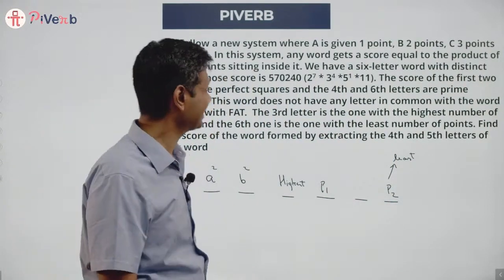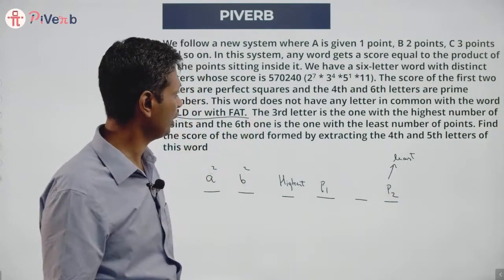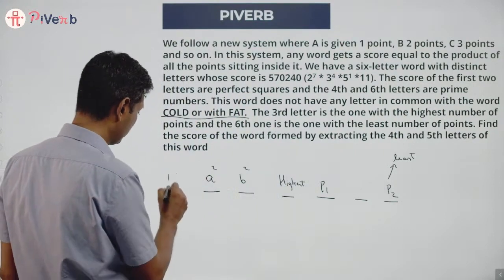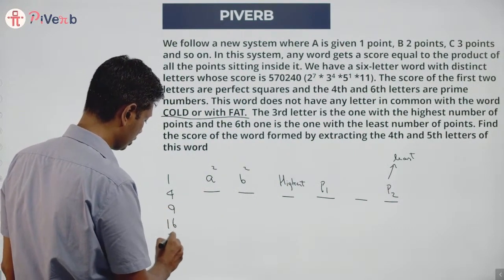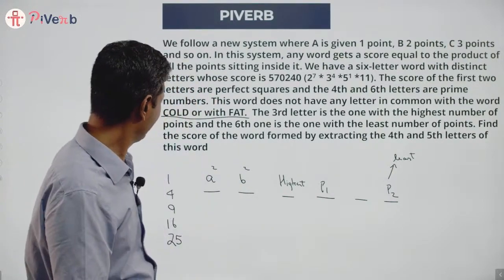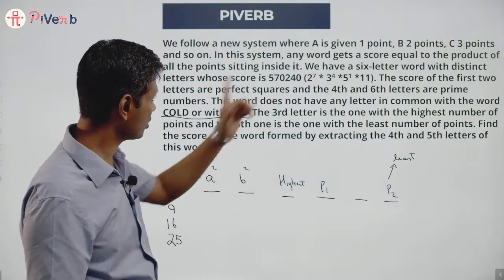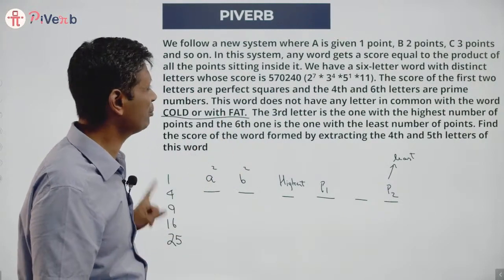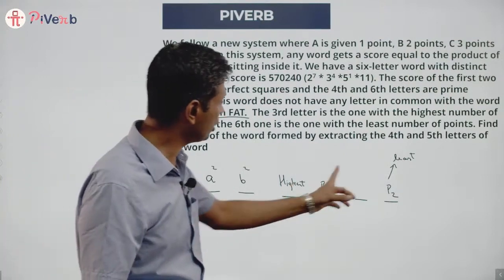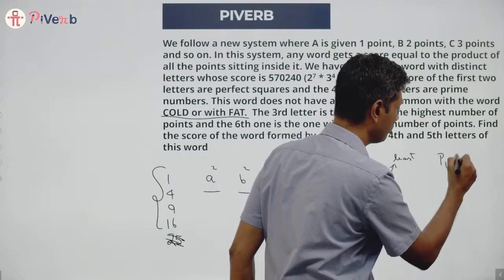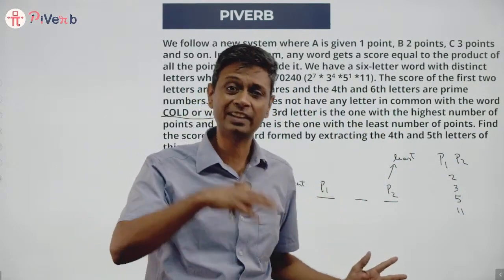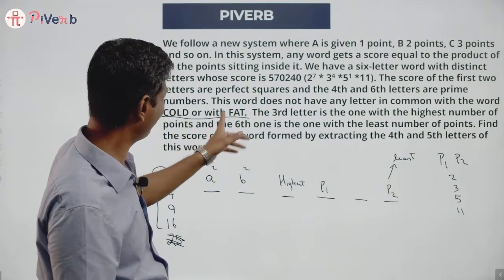Now let's think about the perfect squares. Each digit goes from 1 to 26, and the perfect squares possible are 1, 4, 9, 16, 25 — 36 is not possible. So the candidates are 1, 4, 9, 16, 25. For primes, the only primes appearing in the factorization 2⁷ × 3⁴ × 5 × 11 are 2, 3, 5, and 11 — so P1 and P2 must come from {2, 3, 5, 11}.